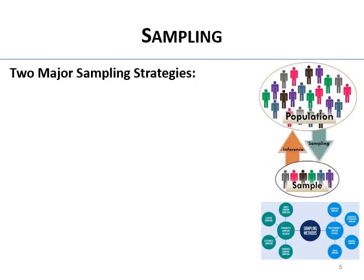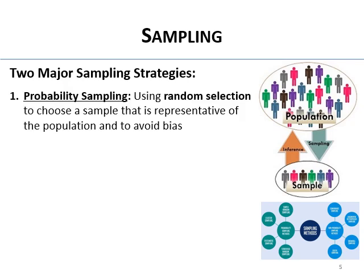There are two major types of sampling strategies — how you pick a sample from the population. There are probability sampling methods, where you use random selection to choose a sample that's representative of the population to avoid bias. If you do it randomly and get a big enough sample, you'll end up with a sample that is representative of the population.